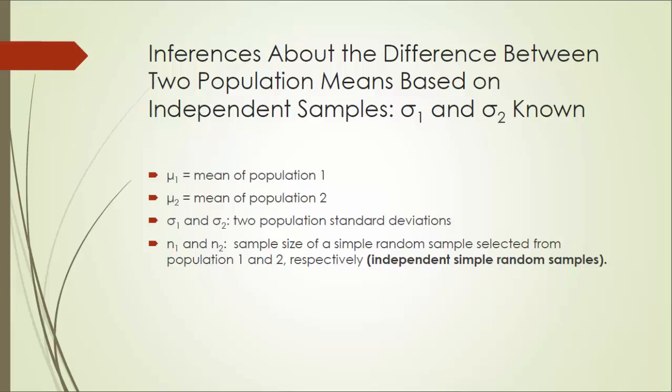First of all, let's establish some notations. mu1 is the mean of population 1, mu2 mean of population 2. And following our convention, sigma1 and sigma2 are two population standard deviations. And n1 and n2 are the sample size selected from either population.